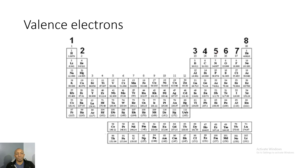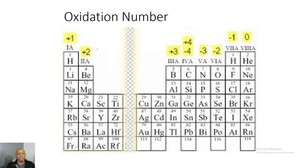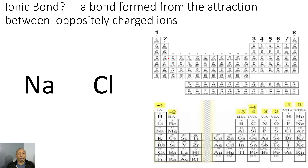Valence electrons also determine chemical properties for the elements. The oxidation number shows the charge that the element ends up getting when it either gains or loses electrons. For example, alkali metals lose one electron, so they end up with a plus one charge. Alkaline earth metals lose two electrons, giving them a plus two charge. The elements in the nitrogen family gain three electrons, giving them a negative three charge.